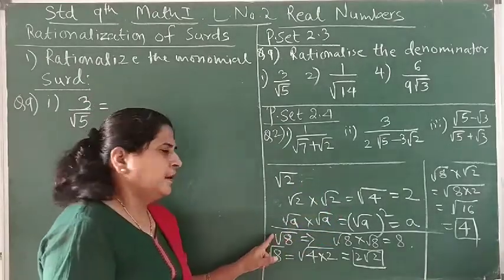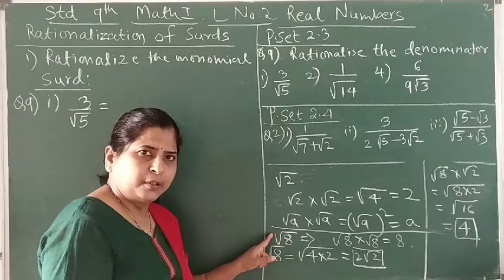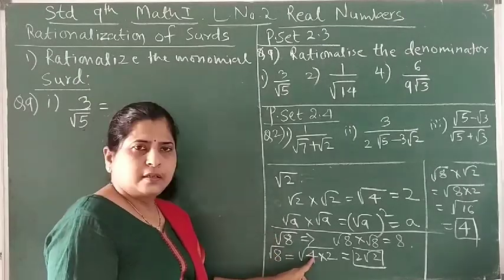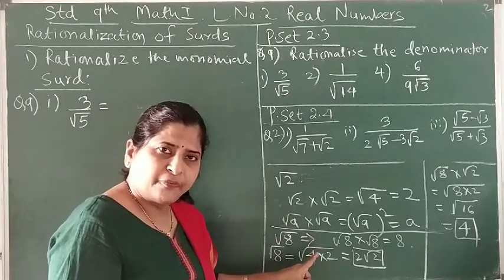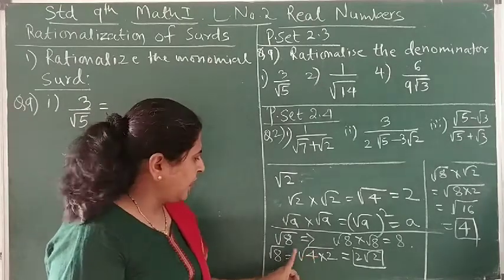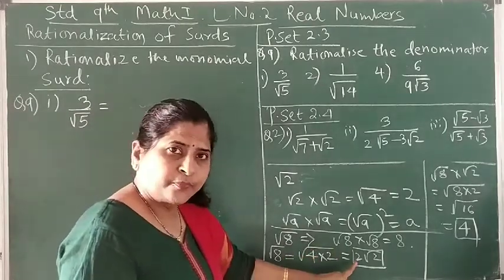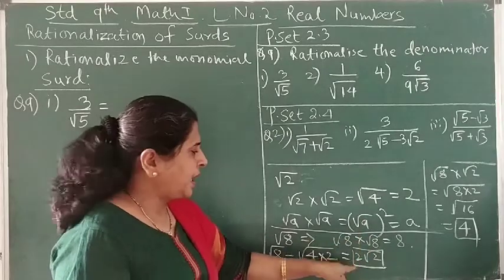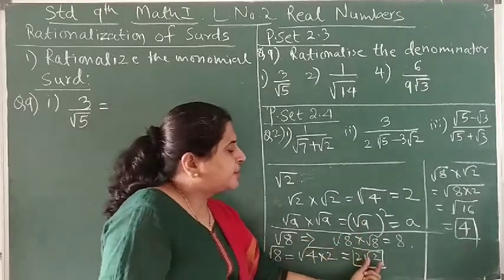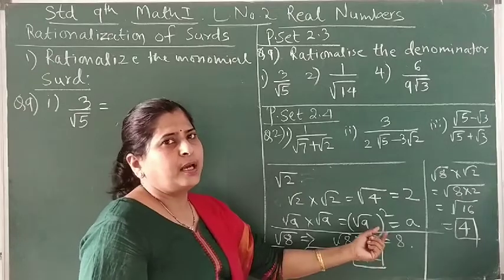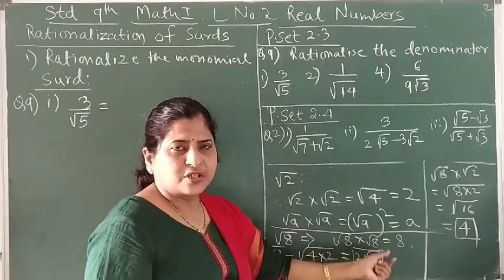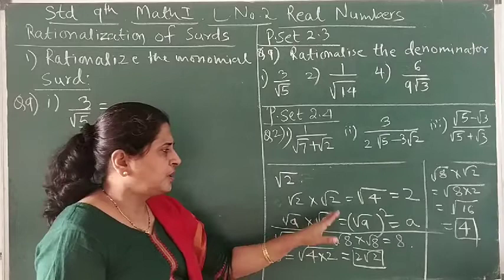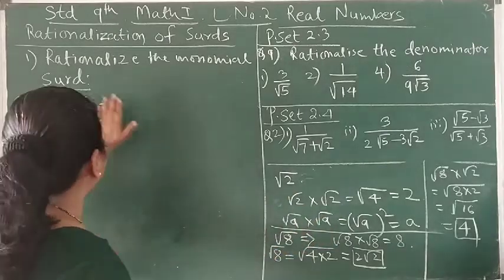If given an irrational number in such a form where one of the factors is a perfect square, find its simplest form. In that simplest form, whichever is the irrational part — multiply numerator and denominator by that irrational part to get a rational denominator.